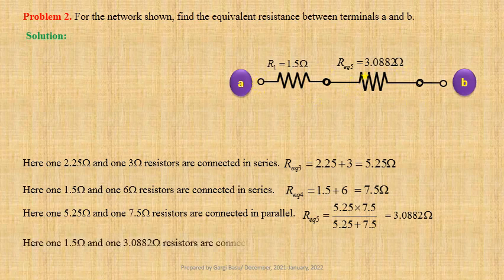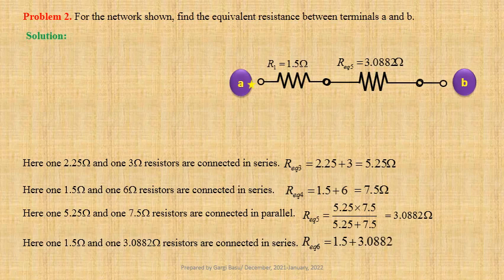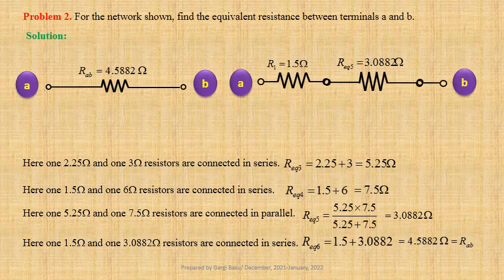One 1.5 ohm and one 3.0882 ohm resistors are connected in series; their equivalent resistance Req6 equals 1.5 plus 3.0882 equals 4.5882 ohm. Req6 equals Rab, the equivalent resistance between terminals A and B.